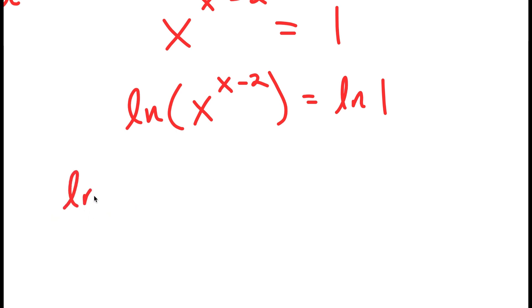Now, if I have something in the form ln a to the power of b, I can move this exponent b to the front, so this turns to b times ln a.